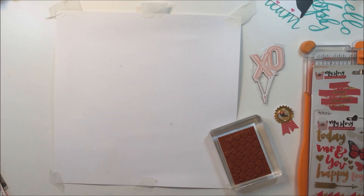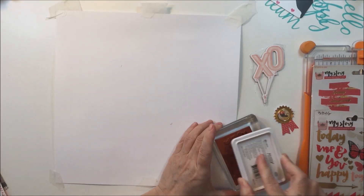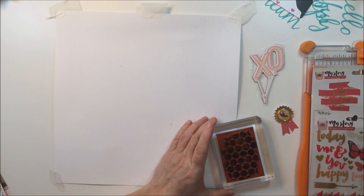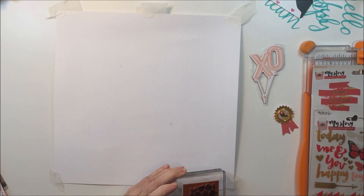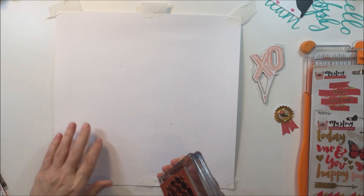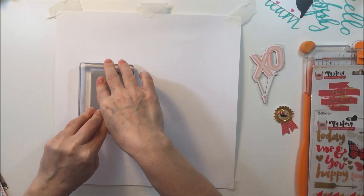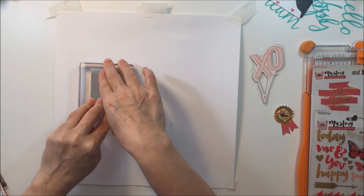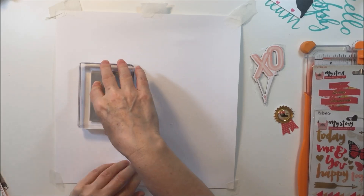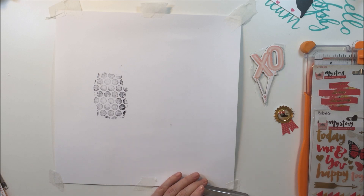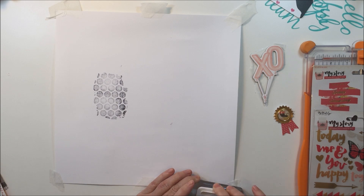I'm going to start off by using some archival black ink and a stamp. I'm just going to stamp this down in a couple of spots — it's a really distressed looking stamp that's got some circles on it. I thought it would be kind of cool for part of the background for this layout, so I'm going to put it down and then place my photo mat sort of in between the two spots where I stamped.